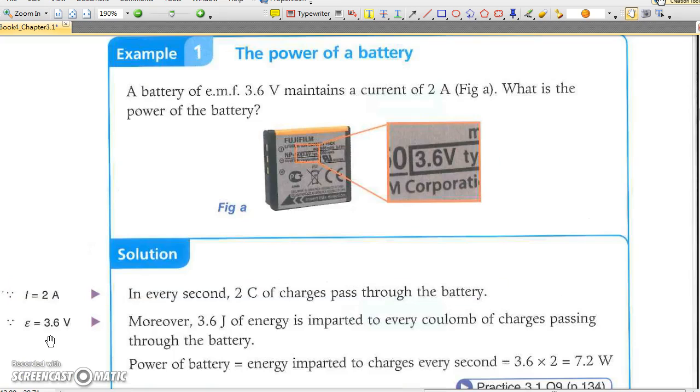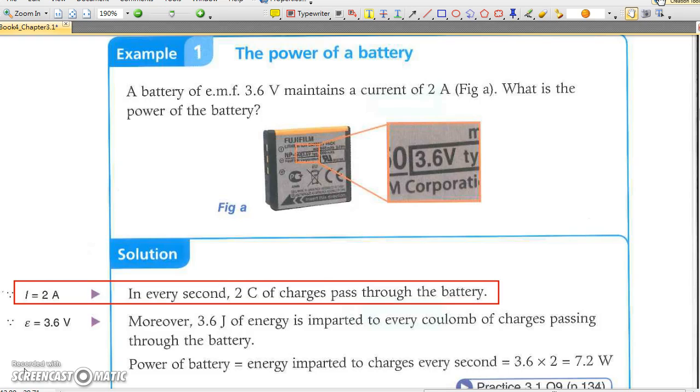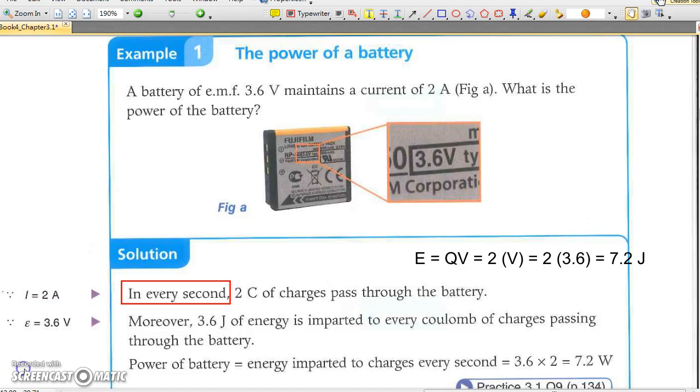In example 1, we have to find the power of a battery when its emf and the current flow are given. As power equals energy converted over time taken, when we consider the case in 1 second, the energy converted E equals Q times ε, where Q is 2 coulombs, and ε is the emf of the source. Hence we have 7.2 Joule in 1 second. And hence the power is 7.2 Joule over 1 second equals 7.2 Watt.